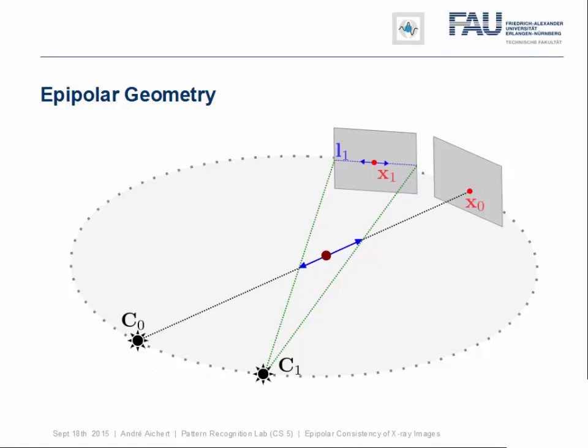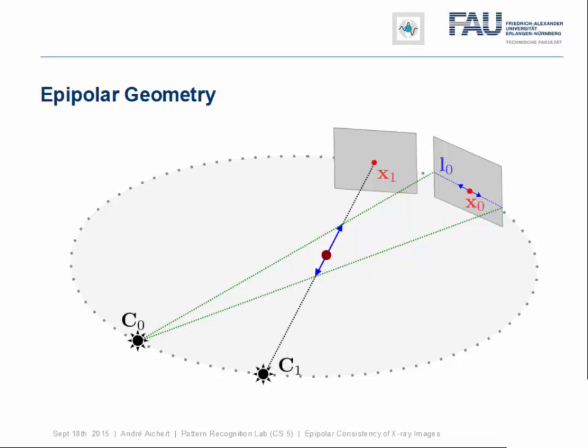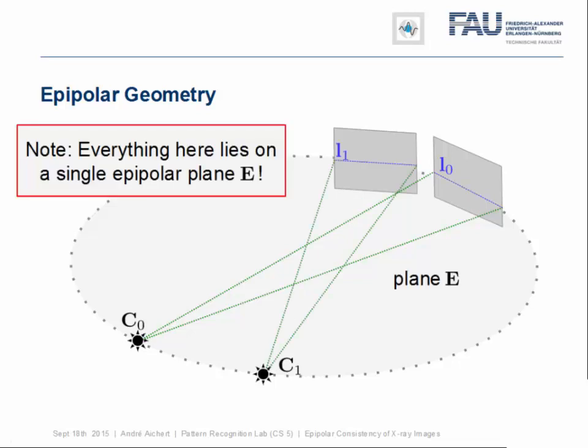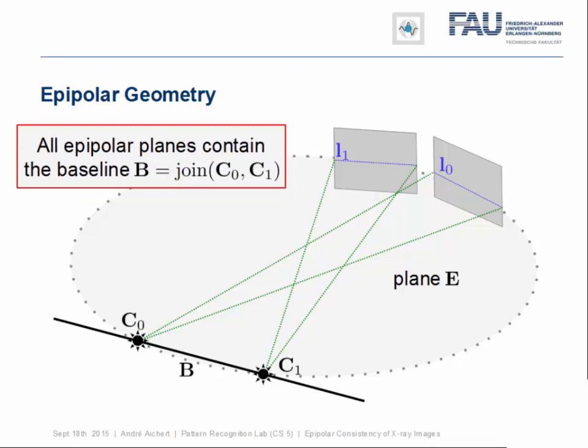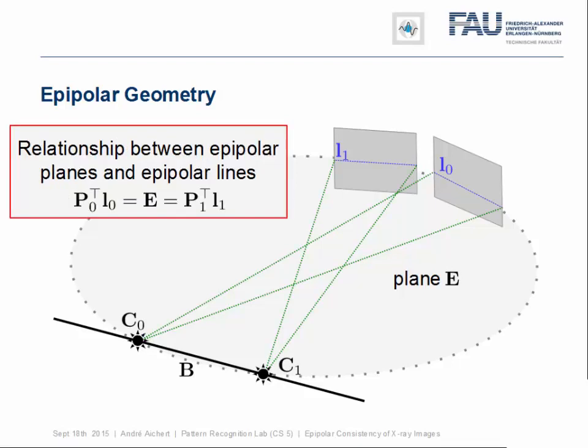Observe that the construction is symmetric in 0 and 1. In fact, we might instead start with the image point X1 and get a line L0 on the first detector. In any case, X, C0 and C1, and the epipolar lines are all located on a plane. By intersection of that plane E with the detectors, we get the corresponding epipolar lines. Also note, the epipolar planes for two images form a bundle about the baseline, which is the line connecting the two source positions. Finally, there exists a simple linear relationship between the epipolar lines L0 and L1 and the epipolar plane E, which is simply multiplication of the epipolar lines with the transpose of the corresponding projection matrix.